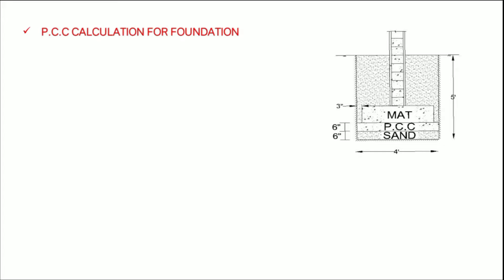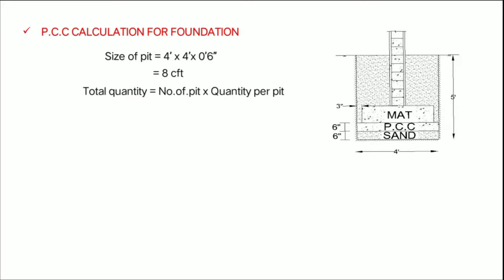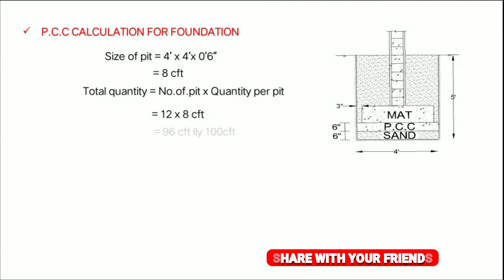The size of the pit is 4 feet by 4 feet by 6 feet. If you have 3 feet, you will have 8 CFT. The total quantity is 12.8. This gives 96 CFT, approximately 100 CFT. If you do the unit conversion, this unit conversion will be 1 unit conversion.